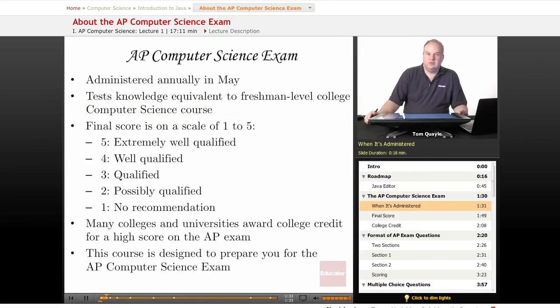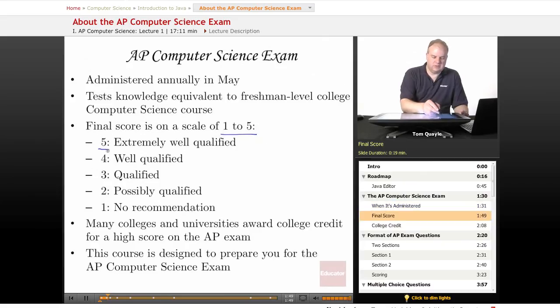The AP Computer Science exam like all AP exams is administered annually in May and it tests knowledge that's considered equivalent to a freshman level college computer science course. Like other AP exams your final score is on a scale of one to five. Five being extremely well qualified and then the score going down to one which indicates no recommendation.